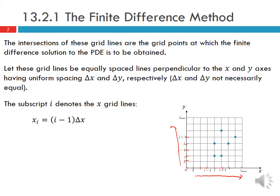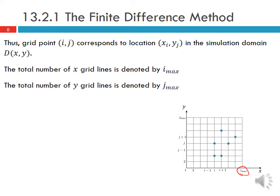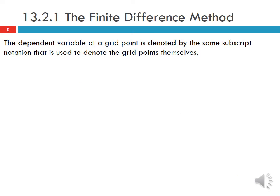The subscript i denotes the x grid lines, so x_i equals (i-1) delta x, and the subscript j denotes the y grid lines, so y_j equals (j-1) delta y. The grid point (i,j) corresponds to the location (x_i, y_j) in the simulation domain D(x,y). The total number of x grid lines is denoted by i_max, and the total number of y grid lines is denoted by j_max. The dependent variable at a grid point is denoted by the same subscript notation used to denote the grid points themselves.